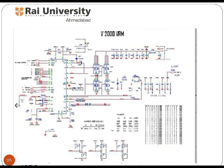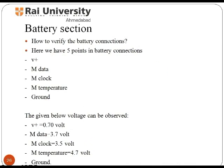You can see the block diagram representing different parts of the VRM section. Now let us study the battery section — its connection and identification. There are 5 points in the battery connection: positive voltage, mdata, and mclock; the other two points are mtemperature and ground. The observed voltages at these points are: positive voltage is 0.70 volts, mdata equals 3.7 volts, mclock equals 3.5 volts, mtemperature equals 4.7 volts, and ground.